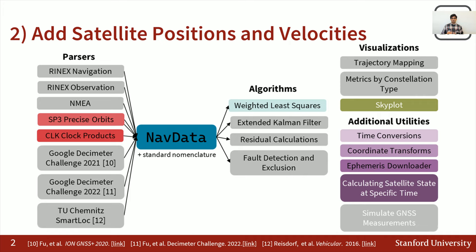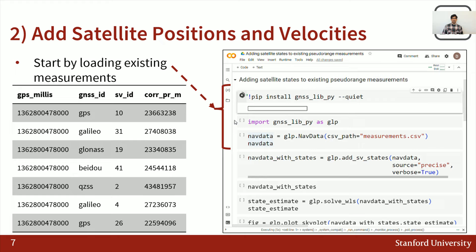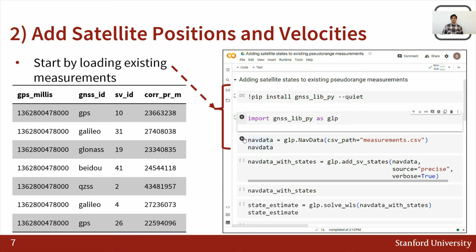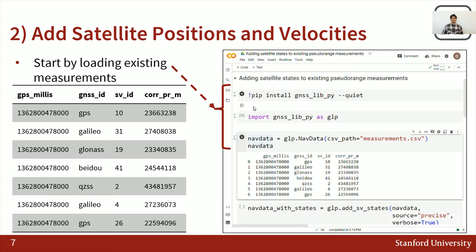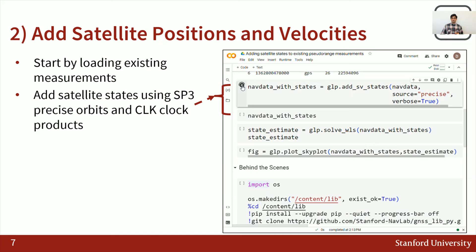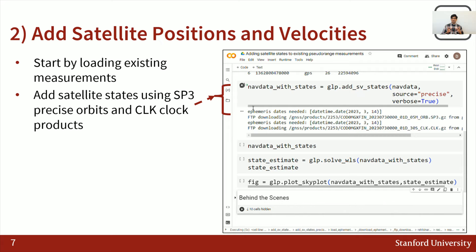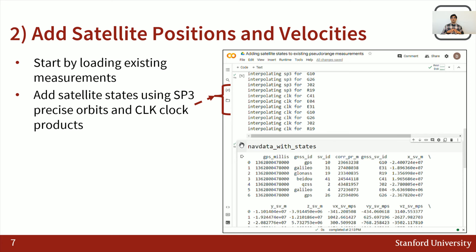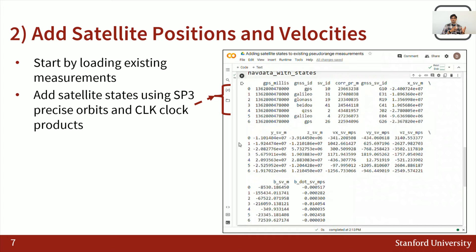Like Derek said, the library is integrated with Google Colab — you pip install gnss_lib_py and import it as glp. You have a set of measurements predefined, shown on the left side, saved as a CSV that you load into a nav data. All you need to do is call the function addSVStates, specifying the source as precise. You can also specify the broadcast source, which will use .n or .rnx navigation files. With verbose mode enabled, it tells you what files it downloaded and which SVs it's interpolating for. The previous measurements containing pseudoranges, GPS millis, GNSS and SV IDs are now appended with satellite positions XSVM, YSVM, ZSVM in ECF, velocities, clock bias, and clock bias drift rate.